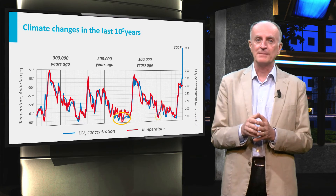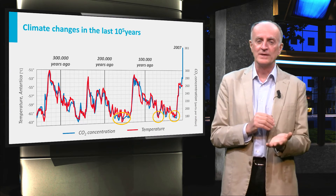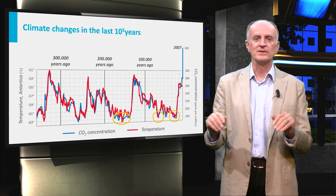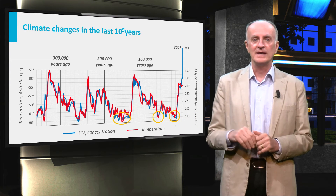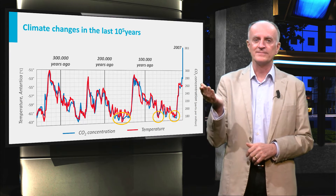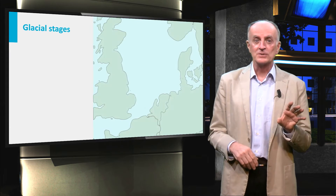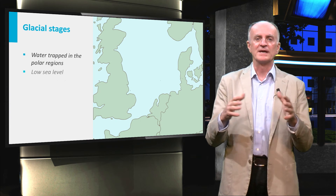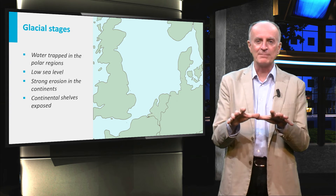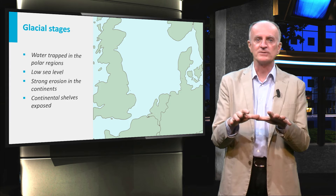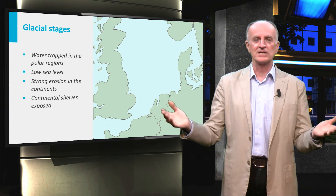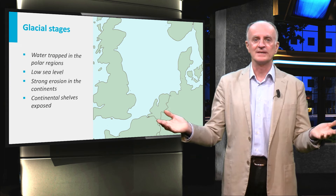At times, temperatures were low and presumably large ice sheets covered large parts of the Earth. In the interglacial periods, temperatures were higher. During time periods with low temperatures, glaciers were very widespread. Large amounts of water were trapped in the polar regions, and sea level was lower than at present, exposing large parts of the continental shelf.